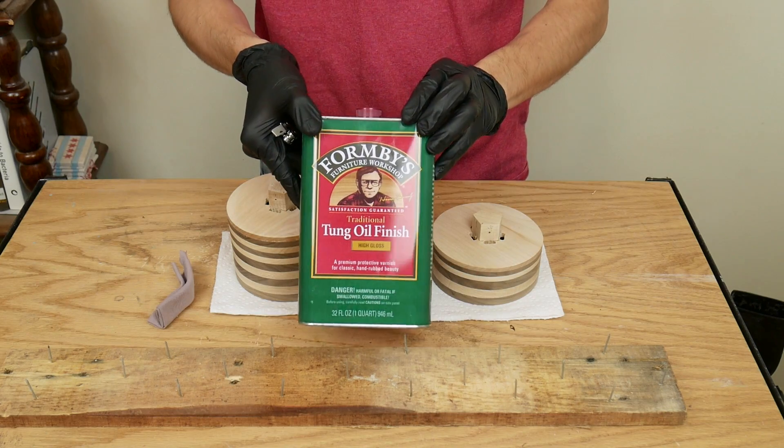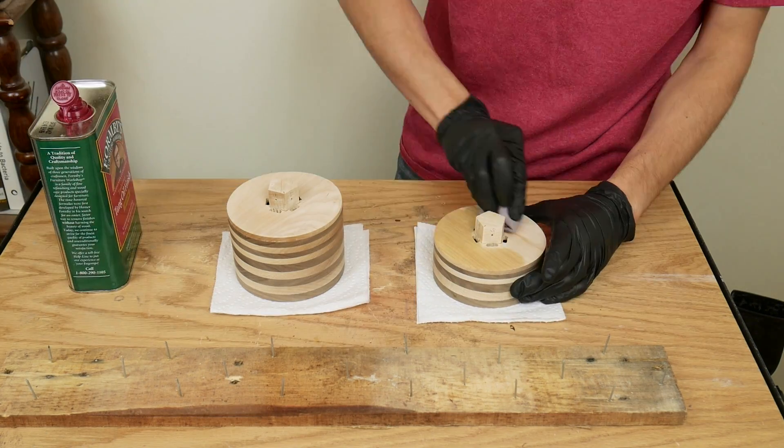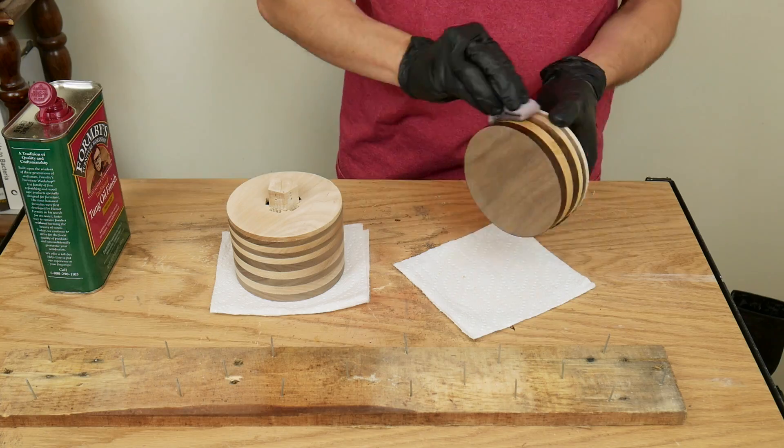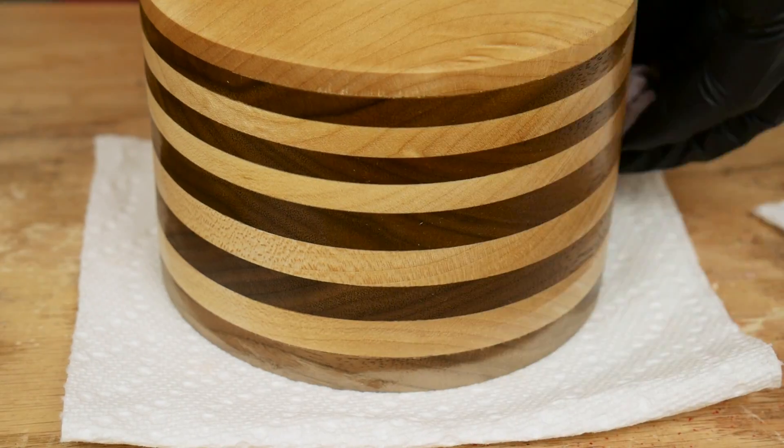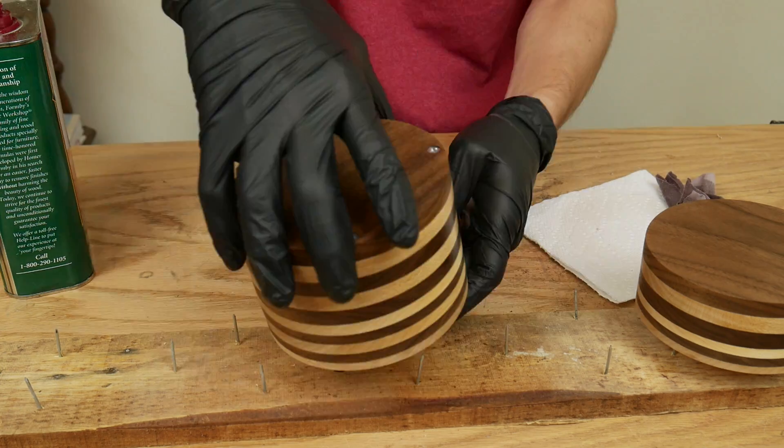I finished the wood with tung oil finish. I applied three coats, sanding lightly with quadruple aught steel wool between coats.